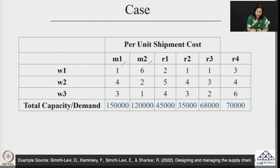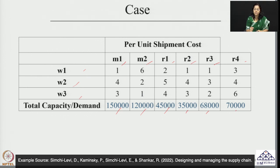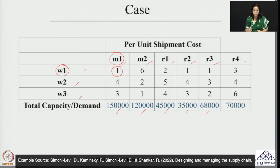Let us summarize all this in a table. There are two manufacturers, three warehouses, and four retailers. Manufacturer capacities and retailer demands are shown. The numbers in between represent the per-unit shipment cost between each pair of facilities. For example, moving one unit from manufacturer one to warehouse one costs one rupee per unit. All transportation costs between every pair of facilities in the possible network are given.